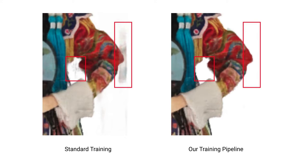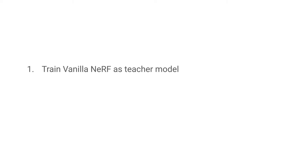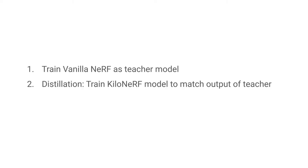Naive training of KiloNERV leads to artifacts in free space as shown in this image. This problem can be mitigated by following our proposed training protocol. We first train a standard NERV model as a so-called teacher. Then we train a KiloNERV model to match the teacher's outputs for arbitrary position and viewing direction inputs.